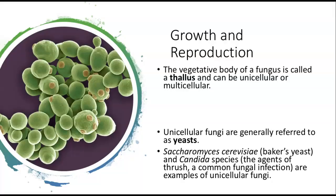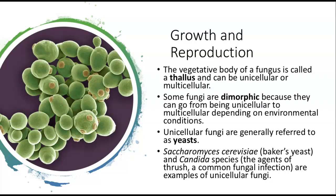The vegetative body of a fungus is called the thallus, and it can be unicellular or multicellular. Unicellular fungi are generally referred to as yeast. Saccharomyces cerevisiae, which is baker's yeast, and Candida species, which are the agents of thrush — a common fungal infection in the mouth — are examples of unicellular fungi. Some fungi are dimorphic because they can transition from unicellular to multicellular depending on environmental conditions.